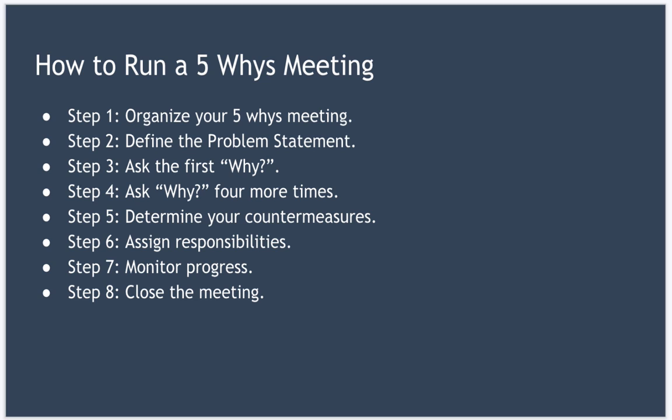Step five: determine your countermeasures — agree on what countermeasures you will take to address each of your five reasons now on the whiteboard. Step six: assign responsibilities — for each countermeasure, agree who is responsible for it and how they will measure the success of that countermeasure.